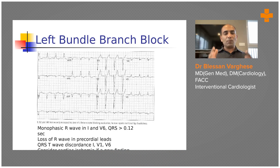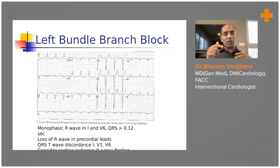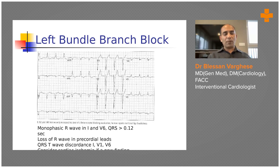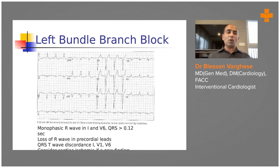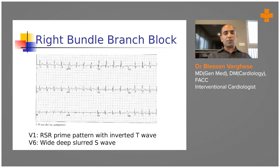This is a classical left bundle branch block. When the QRS duration is prolonged beyond two to three small boxes, and you see wide, positive QRS complexes in leads I, aVL, V5, and V6 — previously described as an M pattern but not necessarily — that constitutes LBBB. For right bundle branch block, look at V1 alone: a wide QRS with an RSR' pattern or a wide R wave with a small S wave, and T-wave inversion in V1 and V2.